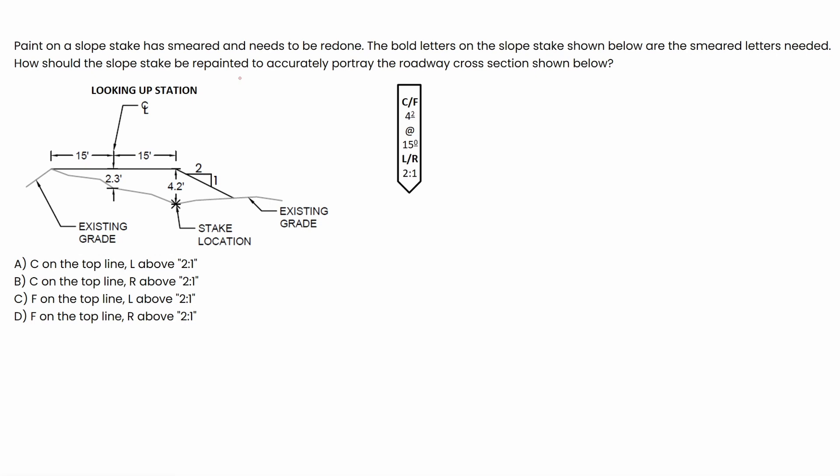And then we see our diagram and then we got a sloped stake there. So our diagram tells us we're looking up stations. That's a hint. And then we see sort of this cross section of our roadway. And then we see that sloped stake there. We see the C slash F or the L slash R both are in bold. So that's what we're going to have to figure out. And then we see our four options available to us.